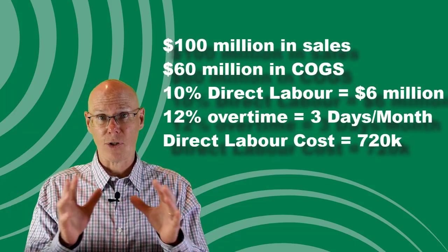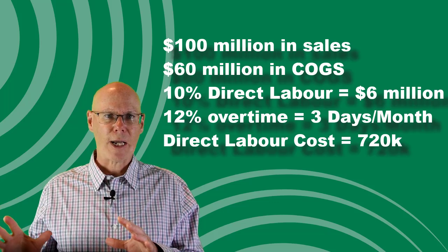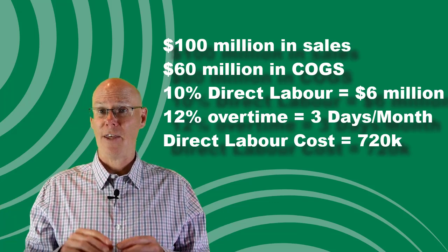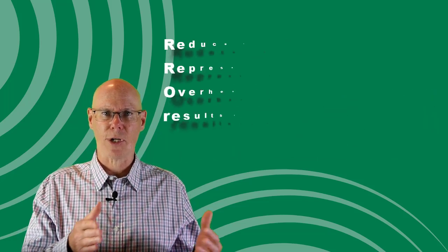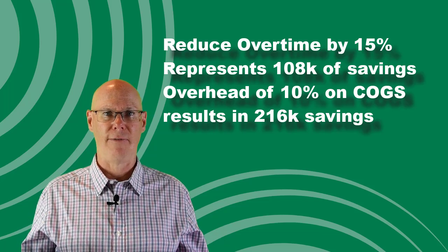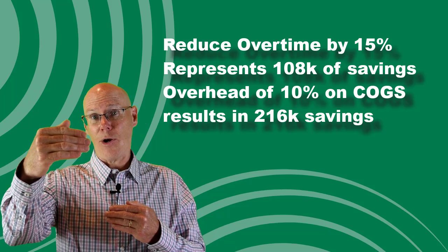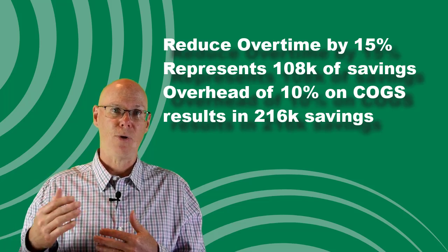I like to start with overtime because the math is fairly straightforward, assuming you're able to get your historical overtime cost — most likely you'll have this as a direct labor number. In my company example for this video series, my company of $100 million in sales has a cost of goods sold of $60 million; 10 percent of that is direct labor, or $6 million. We're running about 12 percent overtime, roughly three days per month, with a direct labor cost of $720,000 per year. By better planning and level-loading the plant, we should be able to reduce this overtime by at least 15 percent — that's just over $108,000 per year in savings on direct labor only. Applying an additional 10 percent overhead on the total cost of goods sold, that savings would be doubled to $216,000.